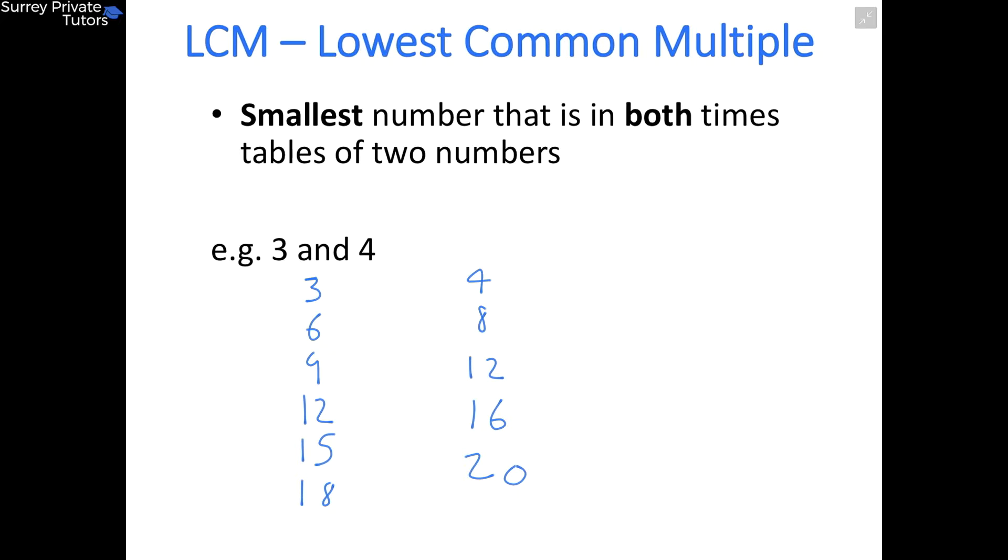And the 4 times table: 4, 8, 12, 16, 20. Of course that carries on, but we don't need to go any further because you can see we've already found a common number which is 12, and that is the smallest common number in both. So that means that the lowest common multiple of 3 and 4 is 12.